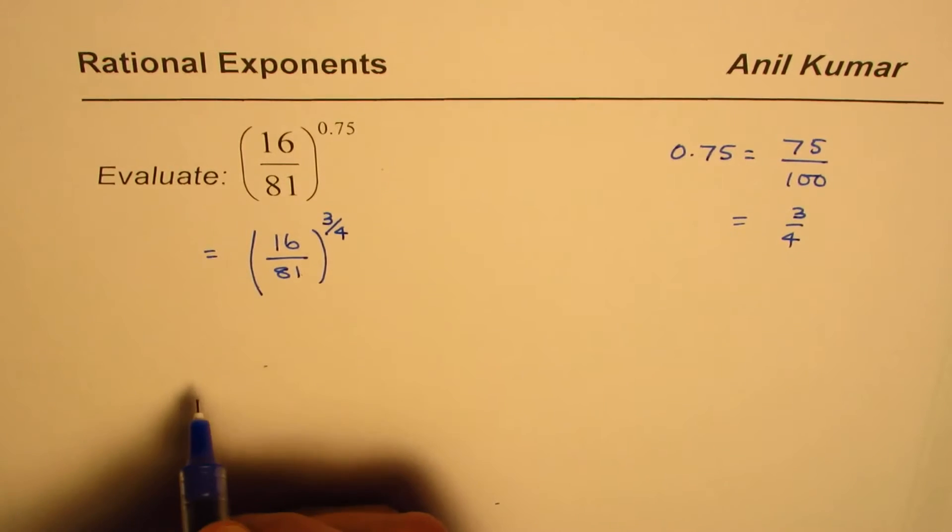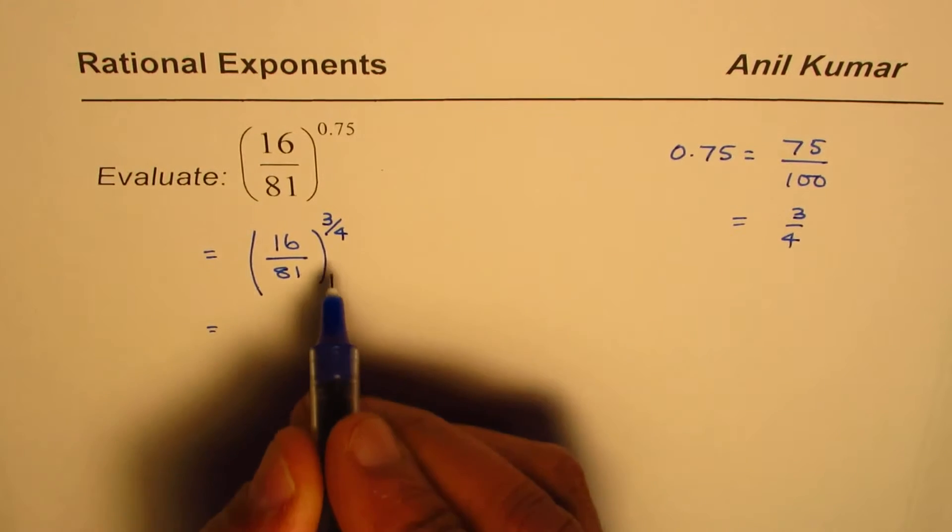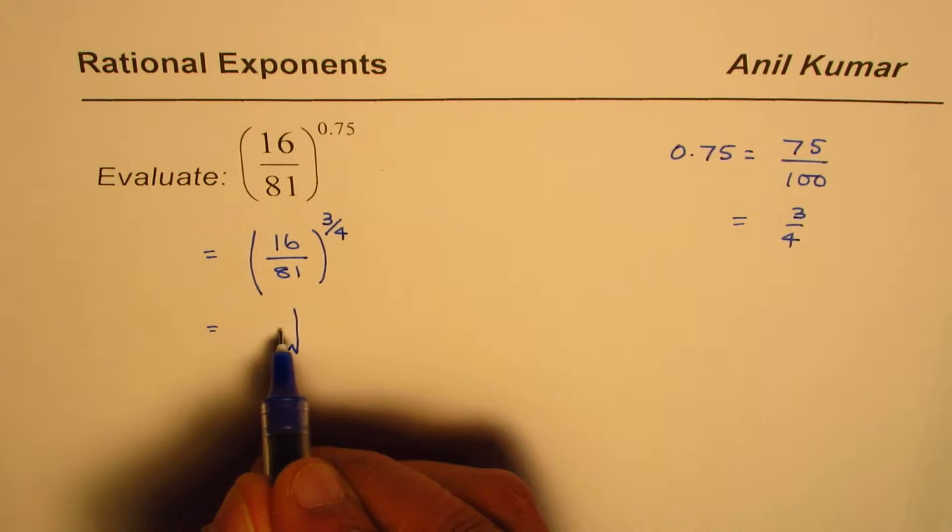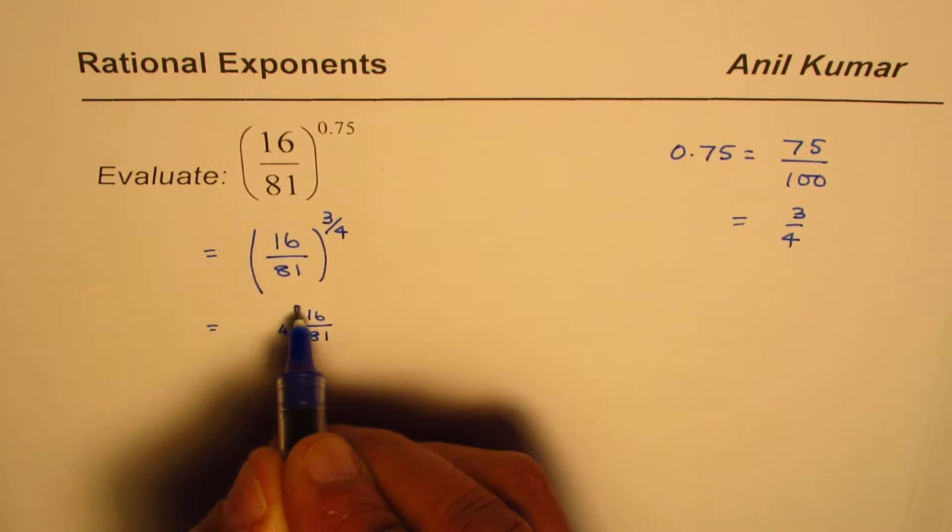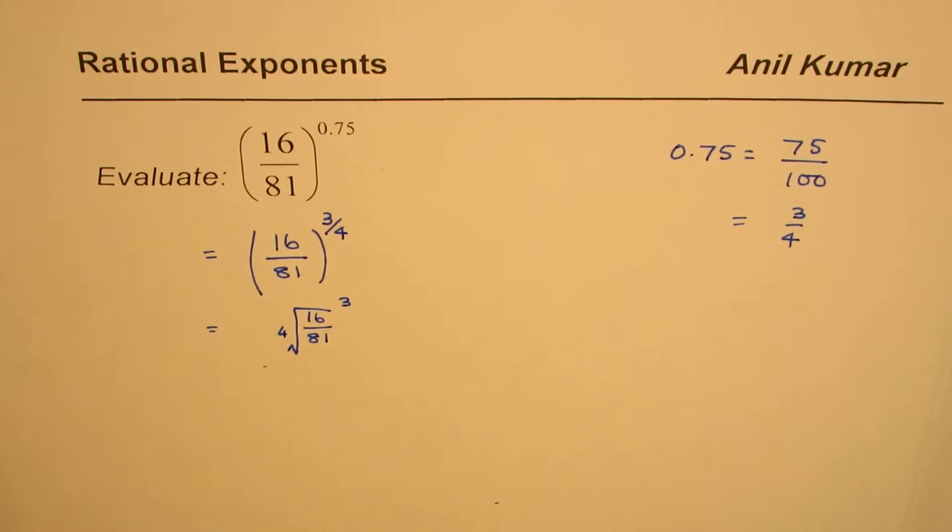3 over 4 means that we can take the fourth root. So let's take the fourth root of 16 over 81 and then we can cube the result.